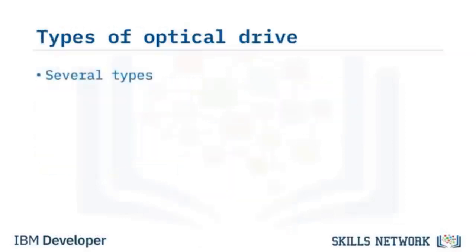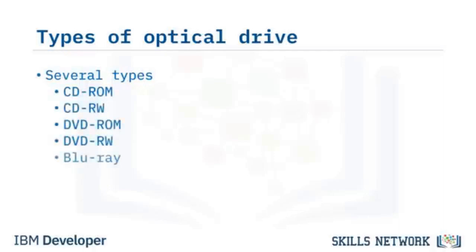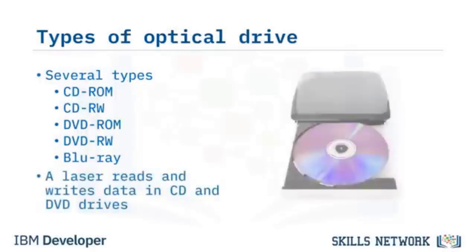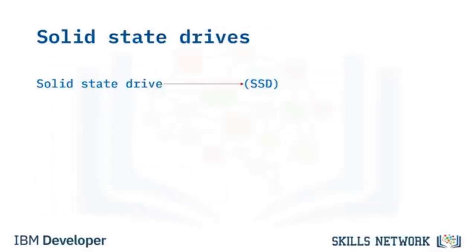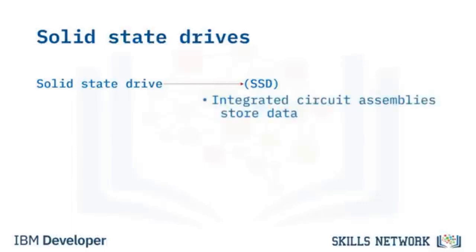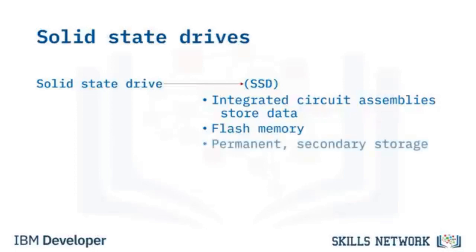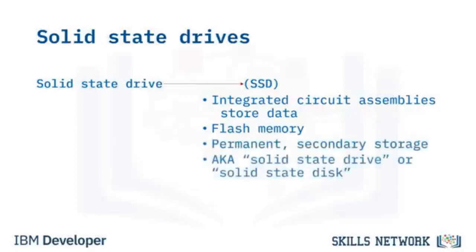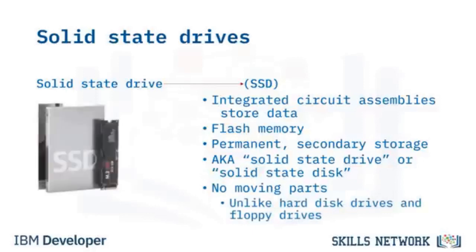Types of optical drives include CD-ROM, CD-RW, DVD-ROM, DVD-RW, and Blu-ray, which has a data capacity of 50 GB. CD and DVD writers use a laser to read and write data. A solid-state drive, or SSD, uses integrated circuit assemblies with flash memory for permanent secondary storage. Unlike HDDs and floppy disks, SSDs lack physical spinning disks and movable read-write heads.